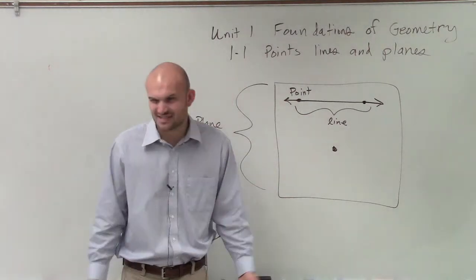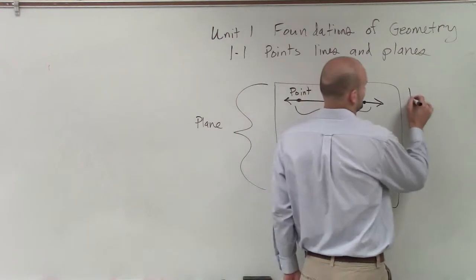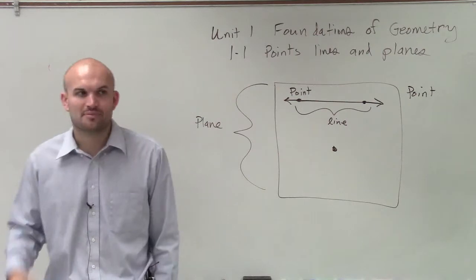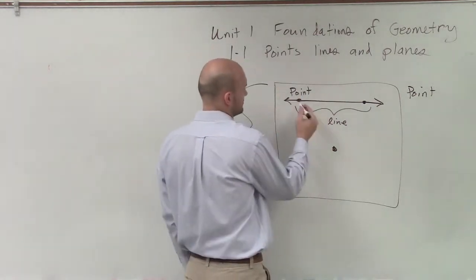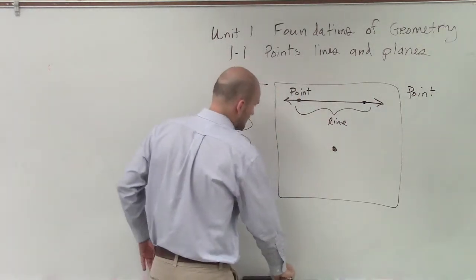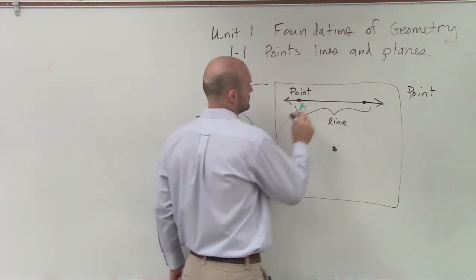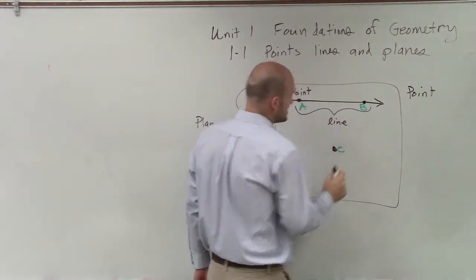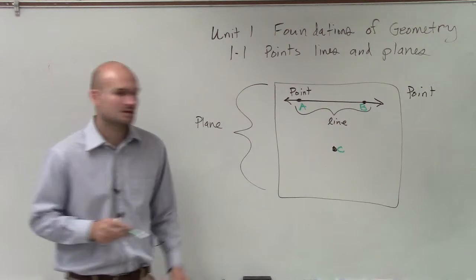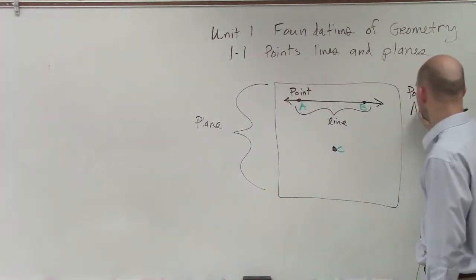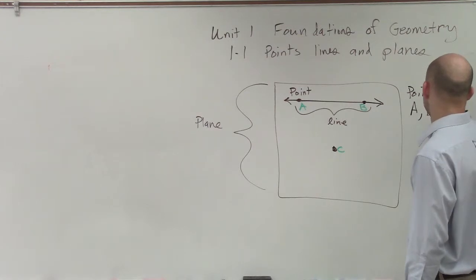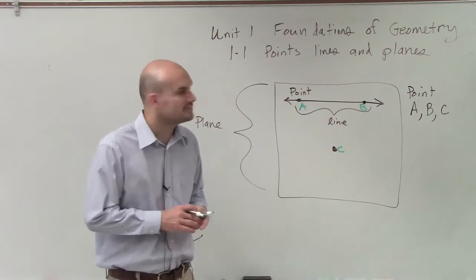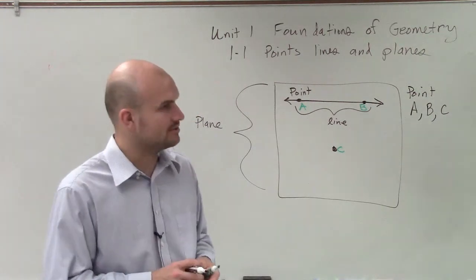So how do we name these things? That's what it usually gets to everybody. Well, ladies and gentlemen, we name a point with a capital letter. So let's call this one A. We call this one B. And this is a point C. So when I say my points, I'll just say it's A, B, C. Those are three different points that are on that diagram. And we use capital letters. Not lowercase. Capital.